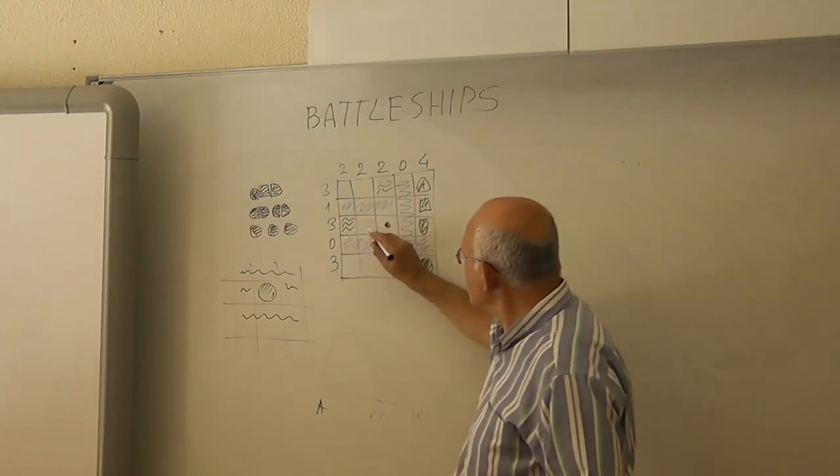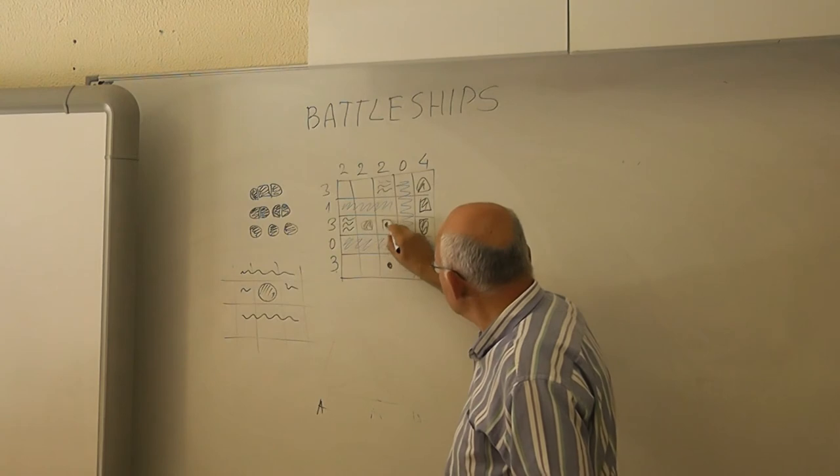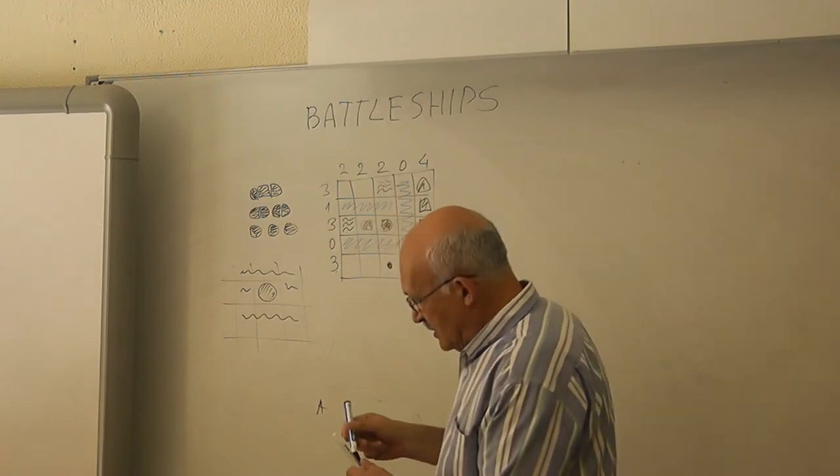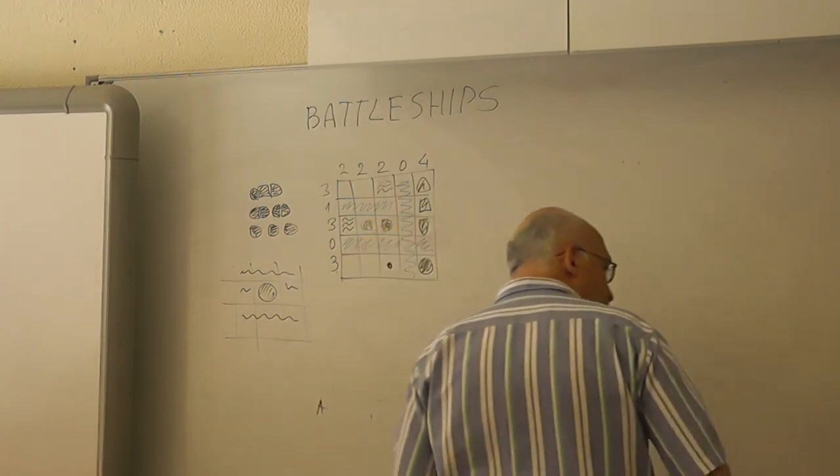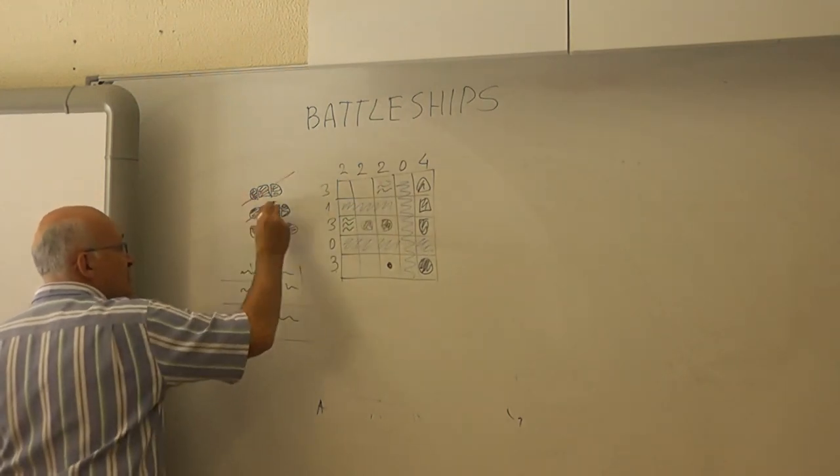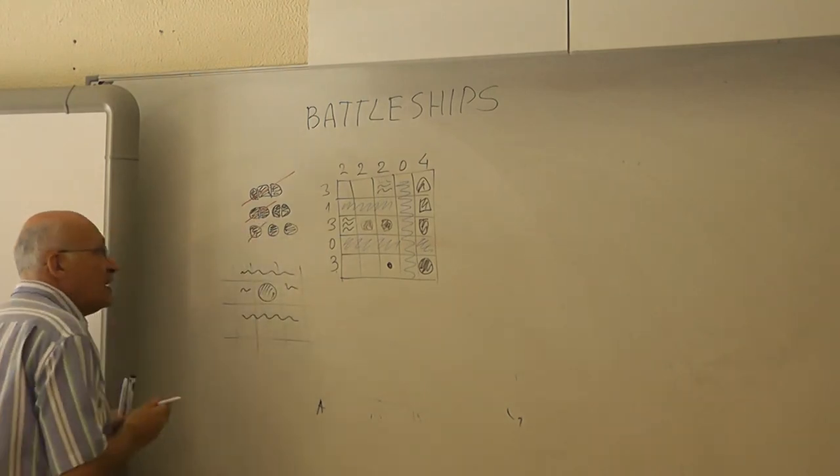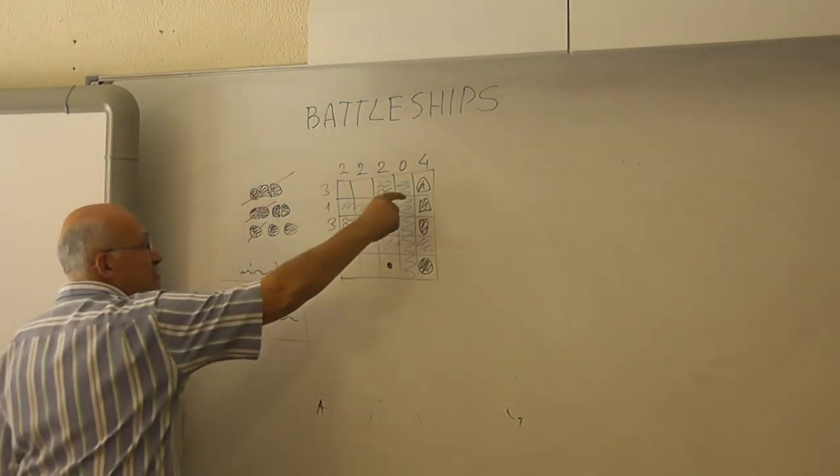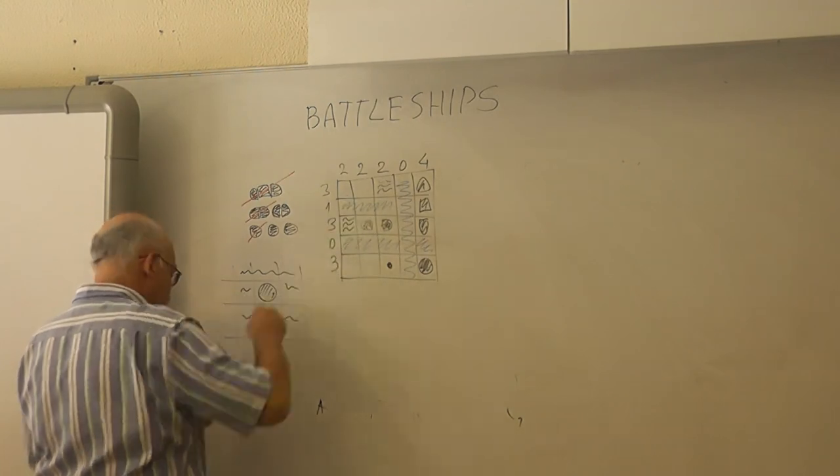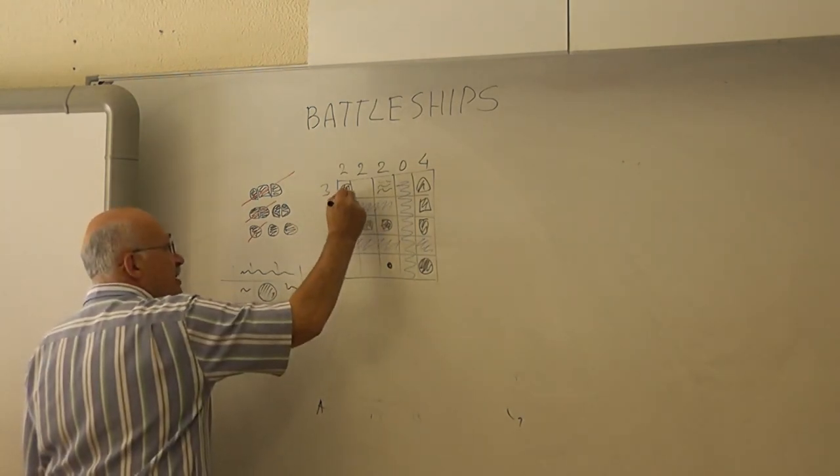Here we have three. So, this will also be occupied by our ships. So, two square ship. Done. Here we have three. So, one and two. So, this will be occupied by our ships.